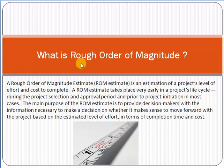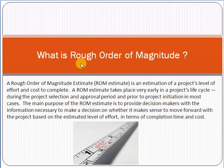Senior management and decision makers use ROM to decide whether to move forward with a project or not. For example, if you are starting an e-commerce solution project, at the time of contract signing you may involve domain experts who can give an idea — say, five months and ten thousand dollars. This is a rough estimate, not a guarantee. The domain experts provide this idea based on their knowledge and experience.